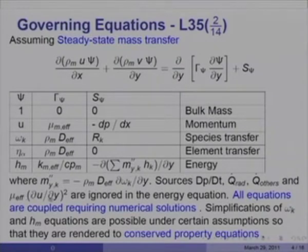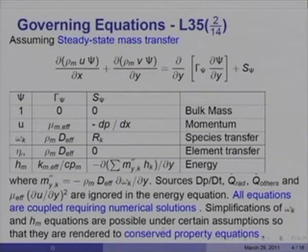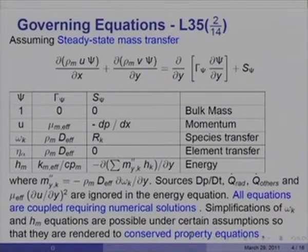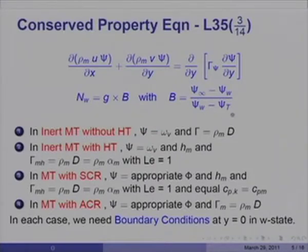All equations are coupled, requiring numerical solutions. Simplifications of the ω_k and H_m equations are possible under certain assumptions so that they are rendered to a conserved property equation. We have gone over all these processes of converting ω_k and H_m equations to conserved property forms in a variety of mass transfer problems. In conserved property form, the equation is simply this with S_φ equal to 0 and Nw equal to Gb, where B equals (ψ_∞ minus ψ_w) divided by (ψ_w minus ψ_T).